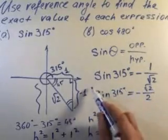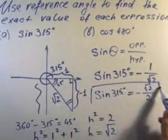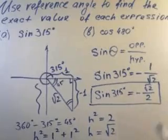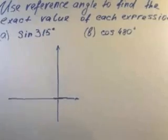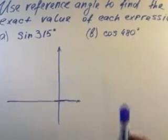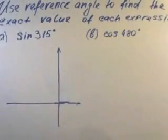And this is the solution for part A of this problem. In part B, we're going to be finding cosine of 480 degrees.